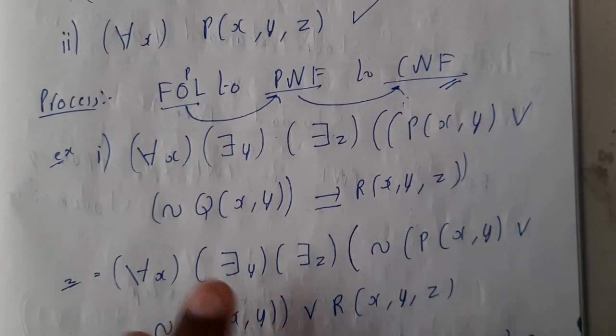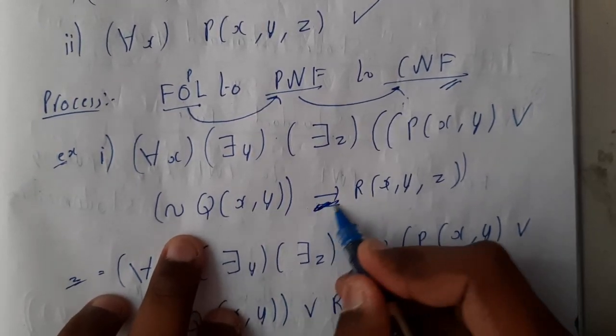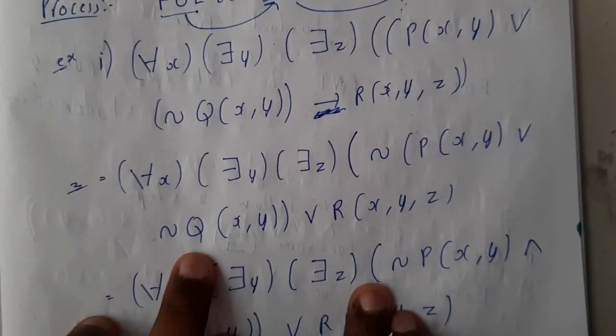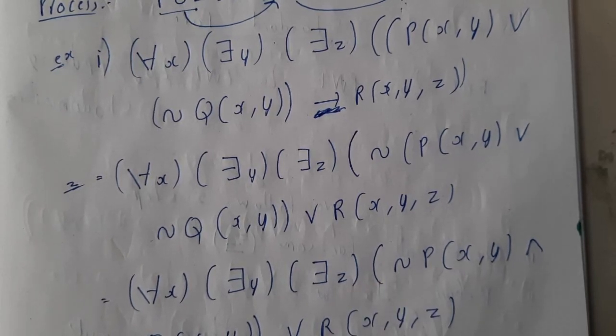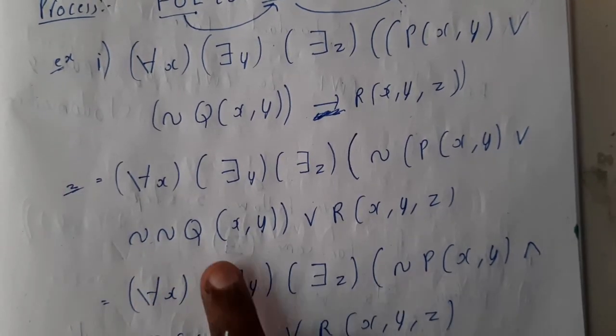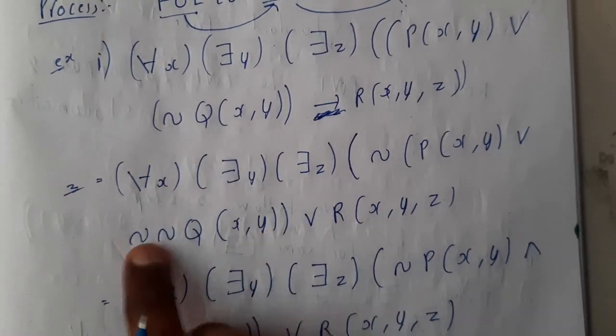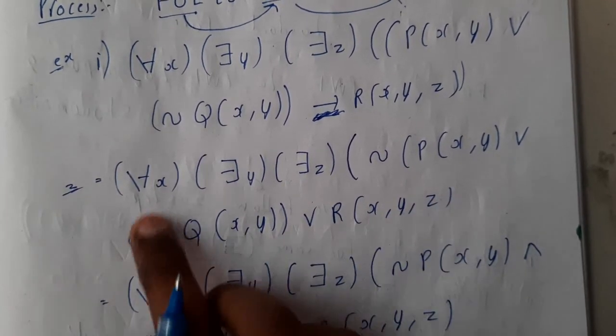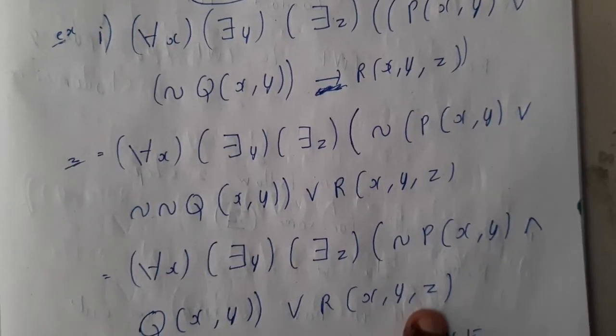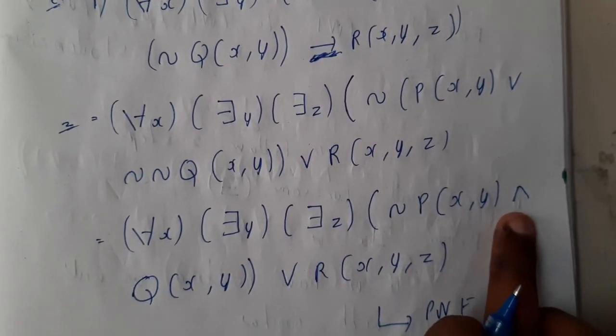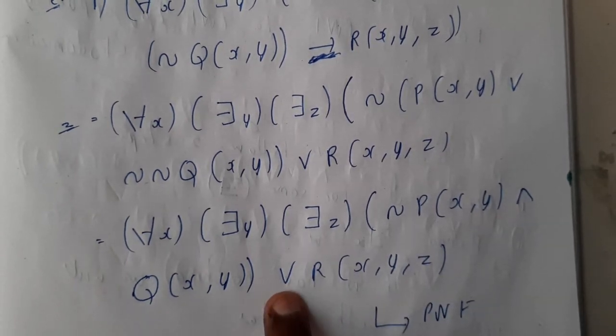Implies means you will be applying not here and you will be applying the same here, in between you will be keeping or. So not Q, sorry, double not should become right. Perfect, double not Q(x,y), it's double not only. R of x comma y comma z. So this not and this not will be cancelled and we will be getting this as a result. So if you observe this, here we are having and symbol and here we are having not symbol.